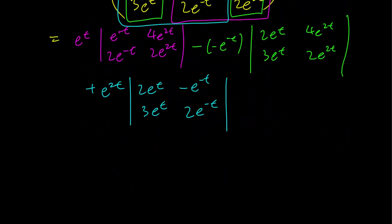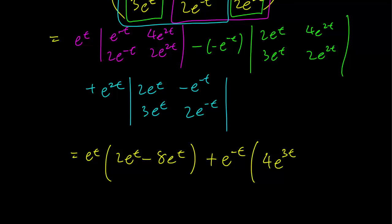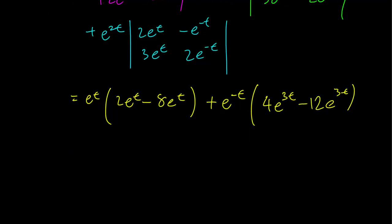Now it's just a matter of calculation. So we have e^t times 2e^t minus 8e^t, plus e^(-t) times 4e^(3t) minus 12e^(3t), plus a third term.